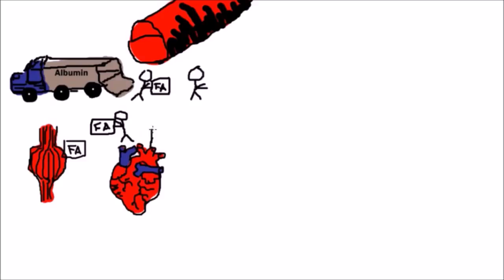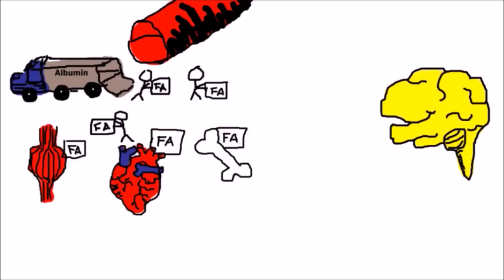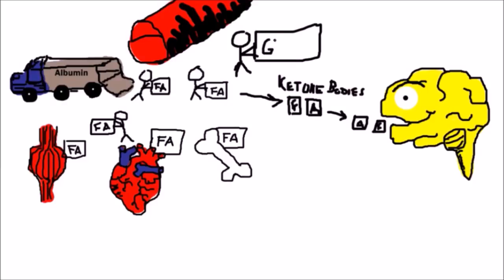This is then carried into the bloodstream by albumin. The fatty acids are then utilized by the muscles, heart, bones, and other organs for fuel. And some of the fatty acids are converted into ketone bodies, which are then used for energy for our brain. The glycerol backbone is converted into glucose and used for more energy for the brain.